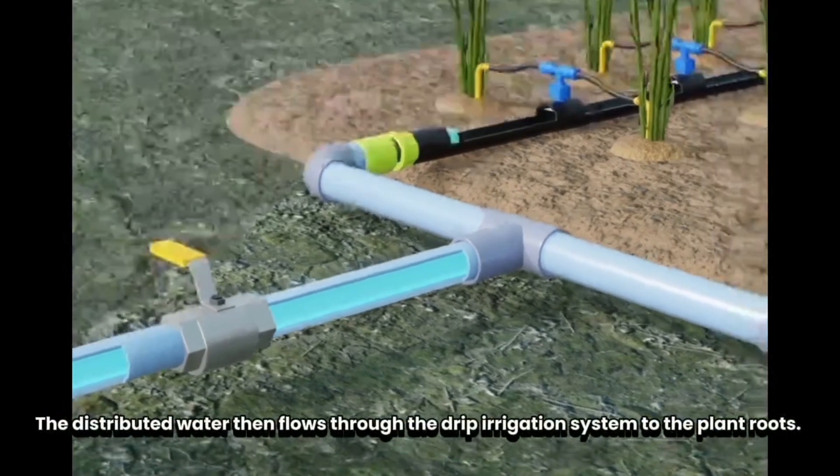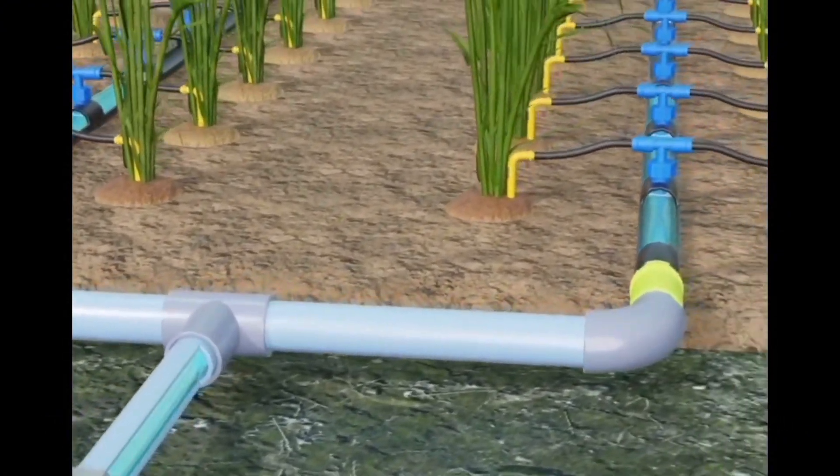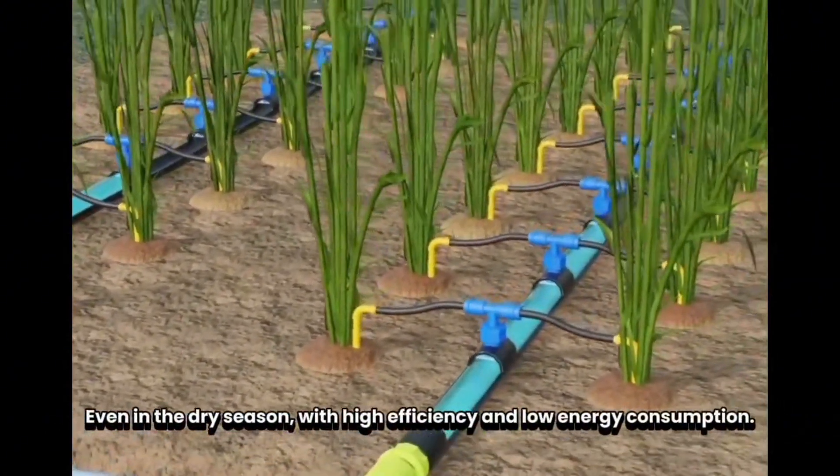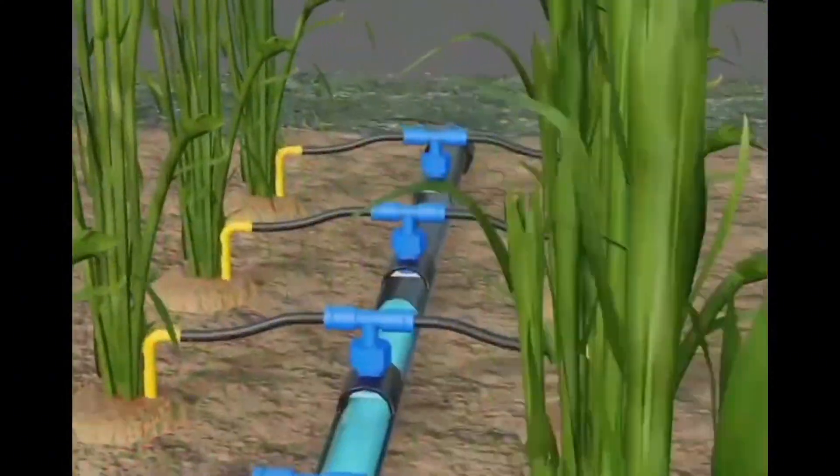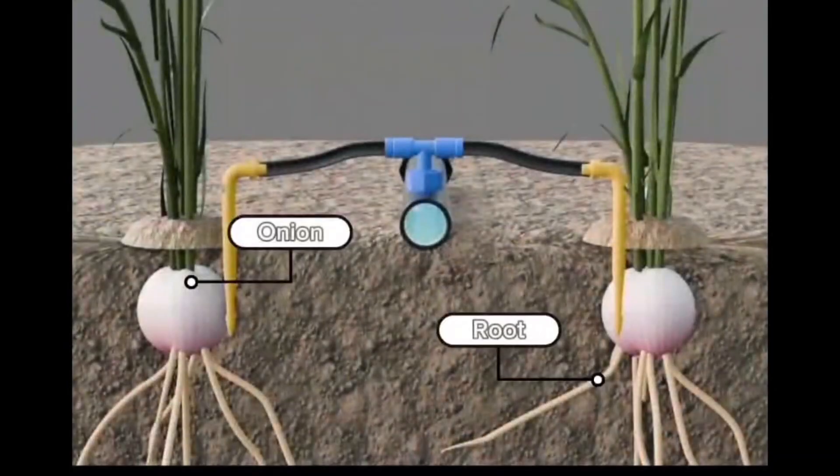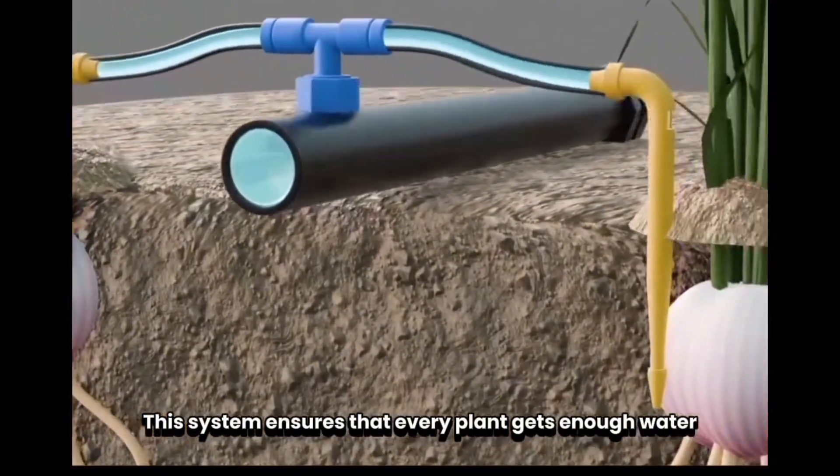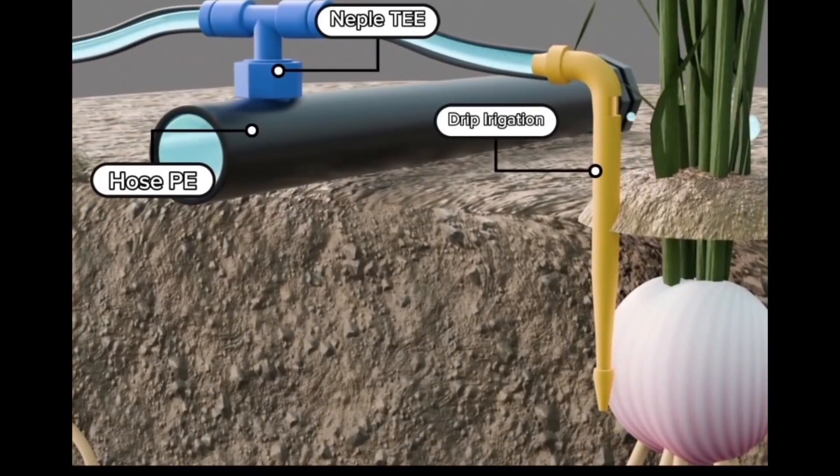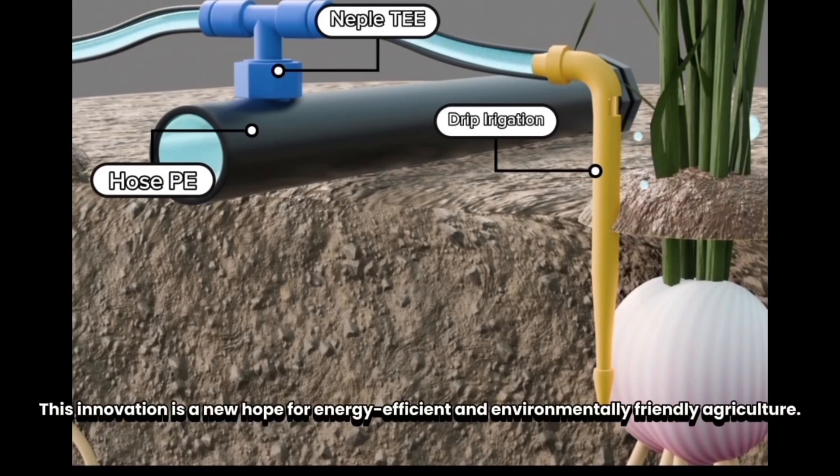The distributed water then flows through the drip irrigation system to the plant roots. Even in the dry season with high efficiency and low energy consumption, with this innovation farmers are no longer dependent on the weather. The system ensures that every plant gets enough water. Water drips slowly, directly to where the plants need it, with no waste. This innovation is a new hope for energy efficient and environmentally friendly agriculture.